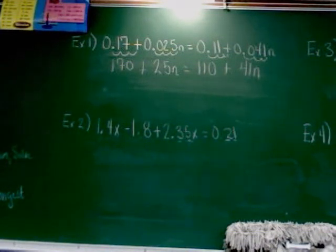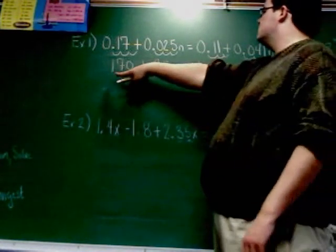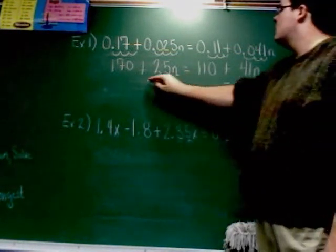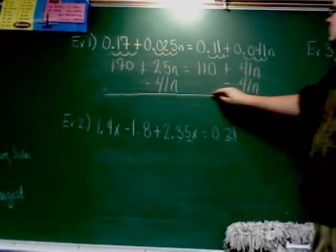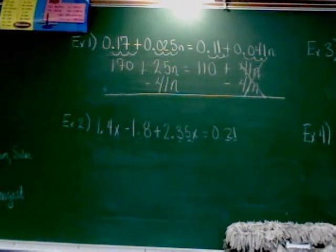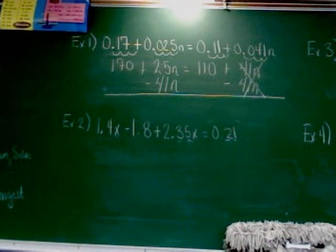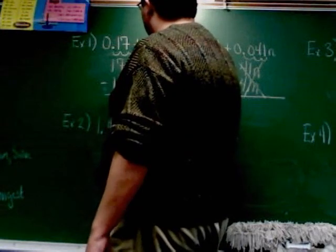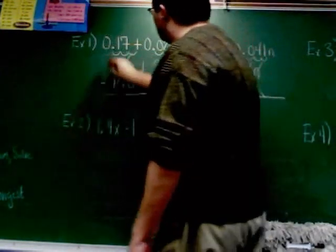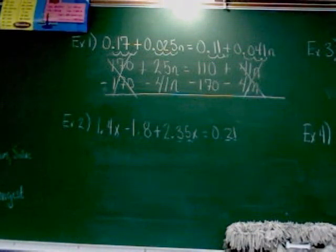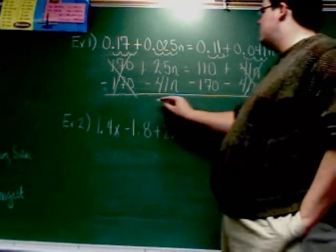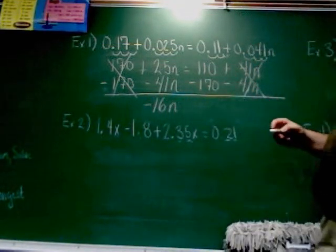I'm going to get variable terms on the left and numbers on the right. I need to move the 41n over, so I'll subtract 41n from both sides. I'll also move 170 in the same step — since 170 is positive, the opposite is negative, so I subtract 170 from each side. That gives me 25n minus 41n equals 110 minus 170, which is negative 16n equals negative 60.